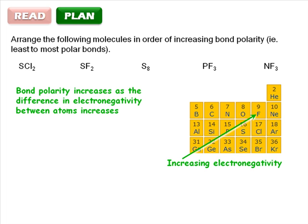With this information, you're ready to solve the problem. There is no difference in electronegativity between the atoms in S8, they're all sulfur atoms, so S8 will have the least polar bonds.